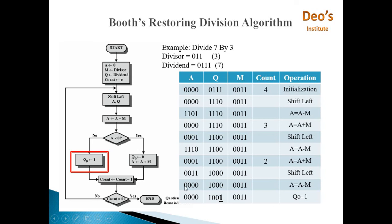One more hint: if the MSB of A is 0 then Q0 will become 1, and if the MSB of A is 1 then Q0 will become 0. So Q0 is opposite to the MSB of A. Count will be decremented by 1 — count will become 1, and Q0 is set to 1.